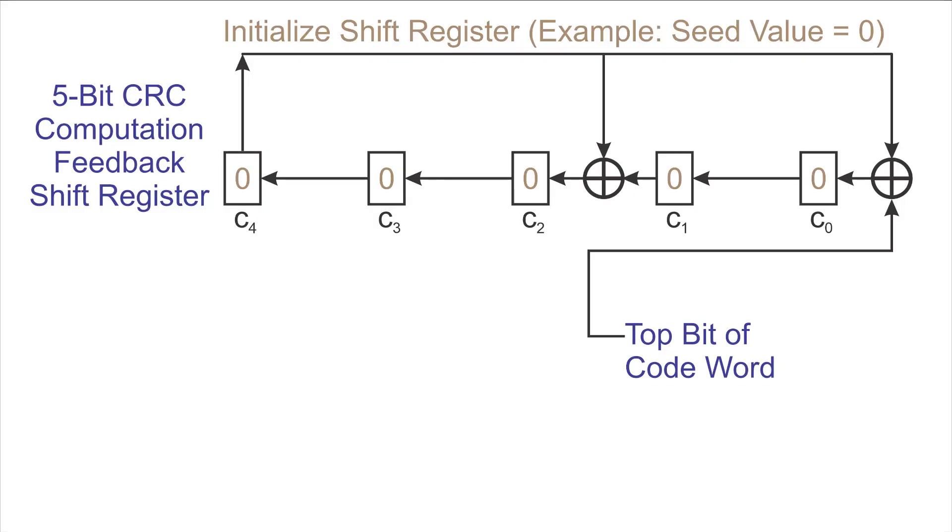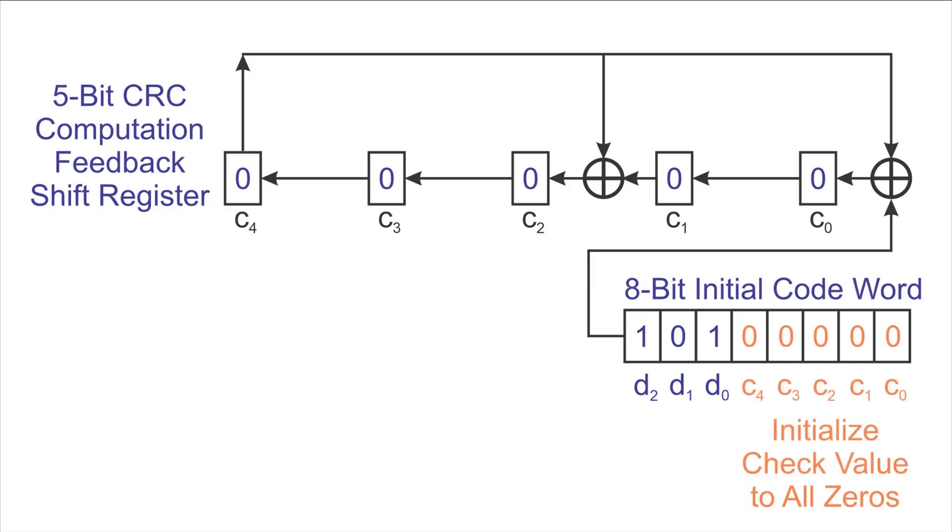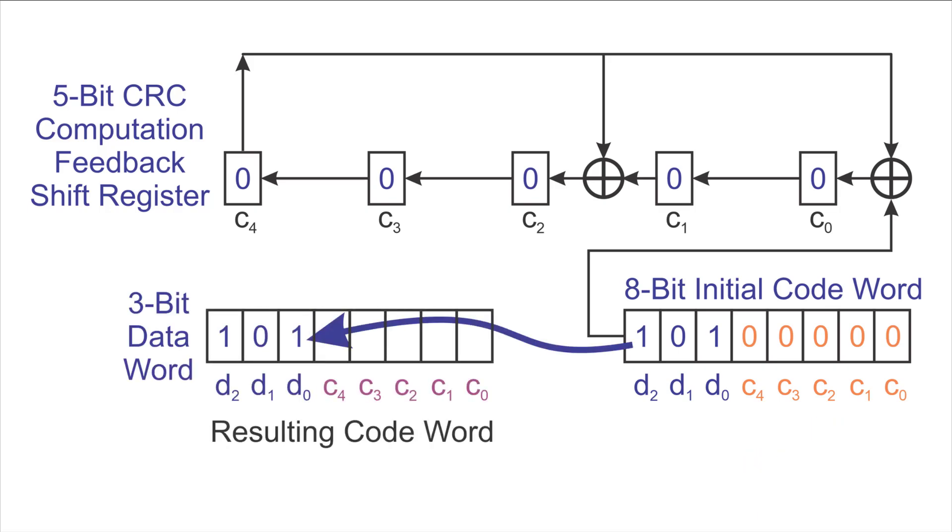Now let's run an example and see how this thing works in practice. We're going to initialize the shift register with a seed value of 0. It doesn't have to be 0, it could be some other seed value, but for this example, we're going to say that the seed value is 0. Now we show our 3-bit data word. And to compute the check value, you have an initial check value that's all zeros and run it through this hardware system. We're going to save the 3 bits of the data word aside for the resulting code word.